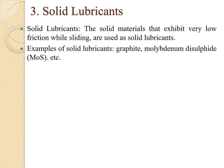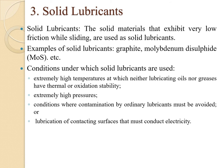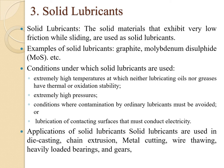The next type is solid lubricants. Solid materials that exhibit very low friction while sliding are used as solid lubricants — examples include graphite and molybdenum disulfide (MoS₂). They are used at extremely high temperatures where lubricating oils and greases lack thermal or oxidation stability, at extremely high pressures, where contamination by ordinary lubricants must be avoided, or for lubrication of contacting surfaces that must conduct electricity.